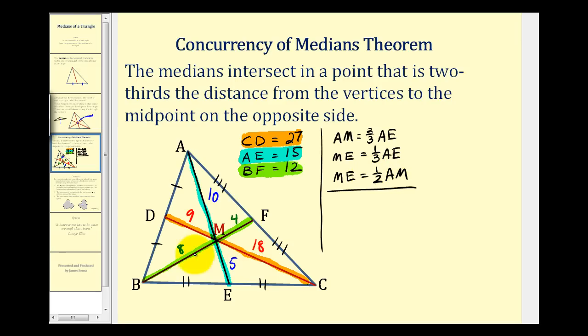And we can state the same properties for each median. If we take a look at the median CD, here in orange, CM is going to be two-thirds CD, and MD will be one-third CD. And again it follows that MD will be one-half of CM.